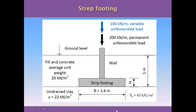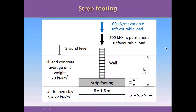The layer of soil under the strip footing is a clay, and this clay has an undrained shear strength of 65 kN per square meter. On top of this clay we have fill and concrete, and we are going to consider an average unit weight for both materials including the wall to calculate the self-weight of the foundation. We have a variable unfavorable load of 100 kN per meter and 200 kN per meter of permanent unfavorable load coming from the building supported by this shallow foundation.